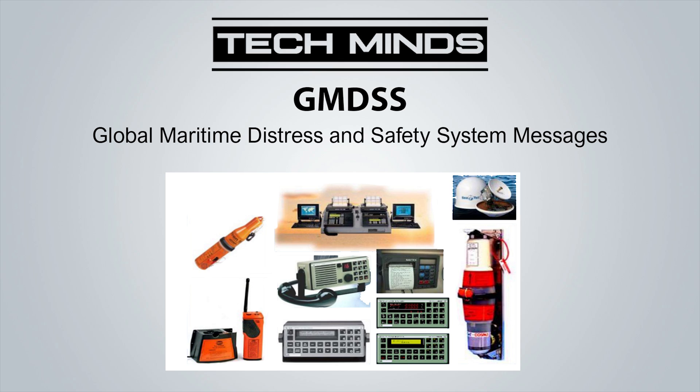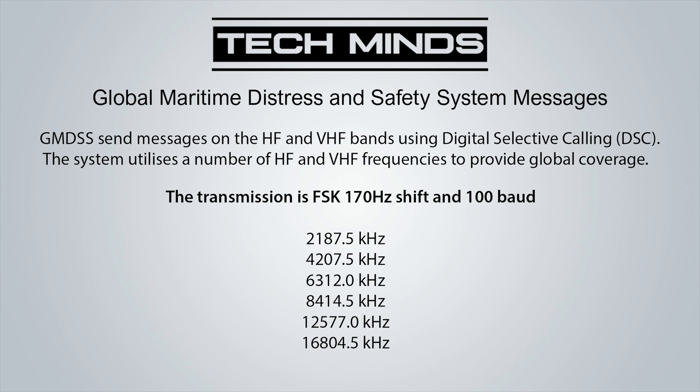With a capable SDR receiver and a DSC decoder, we are able to decode and read GMDSS messages being broadcast. Because of the low frequency, you will need a good HF antenna. These transmissions are FSK with a 170 Hz shift at 100 baud, broadcast on six different medium wave and HF frequencies. I found I received more transmissions on 2187.5 kHz. For decoding, I'm using YADD — Yet Another DSC Decoder — link in the description.